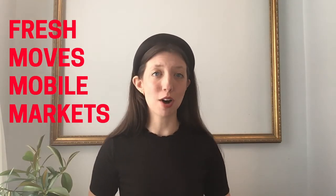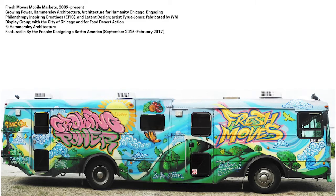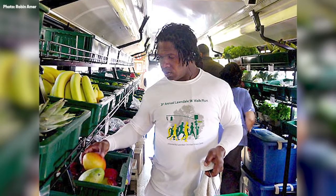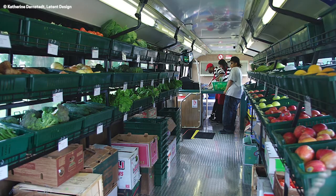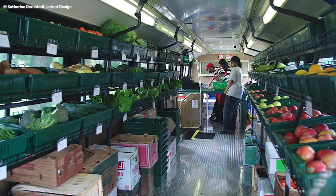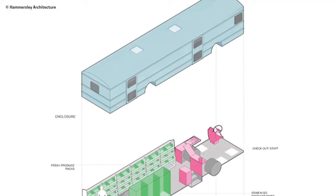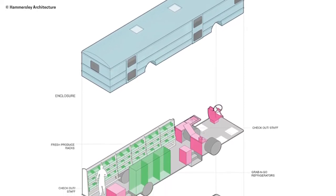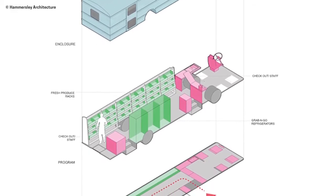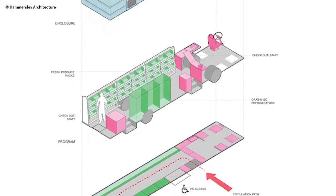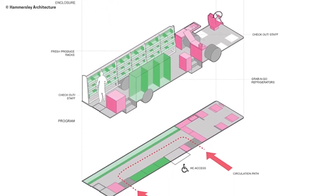Here's another example: Fresh Moves Mobile Markets. Designed to recycle decommissioned transit buses and convert them into mobile farm stands, Fresh Moves Mobile Markets brings healthy, affordable, and locally grown produce to underserved neighborhoods in Chicago. Not only does this design promote sustainable farming, recycling resources, and fostering health and wellness, but it's also meeting the needs of communities that are lacking in access to fresh food and groceries.